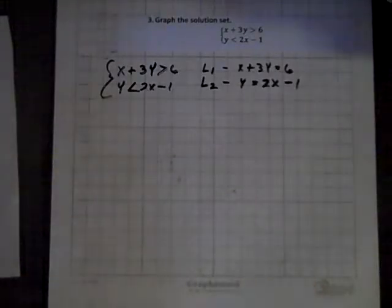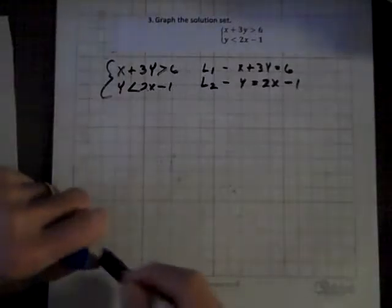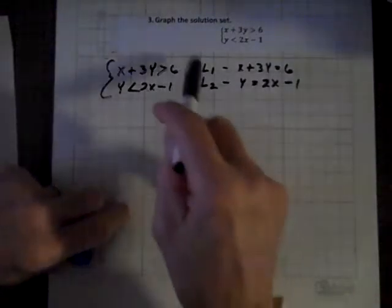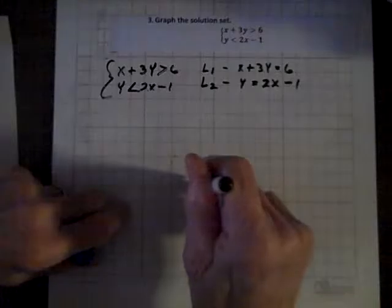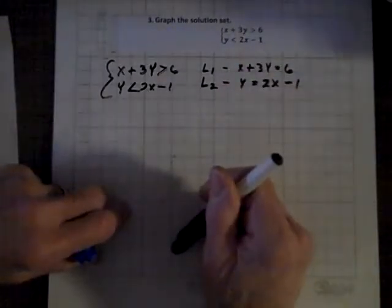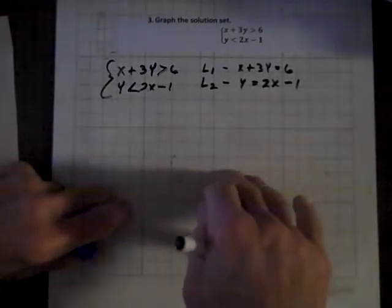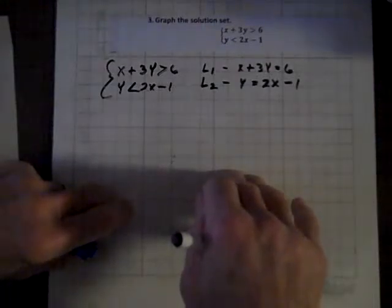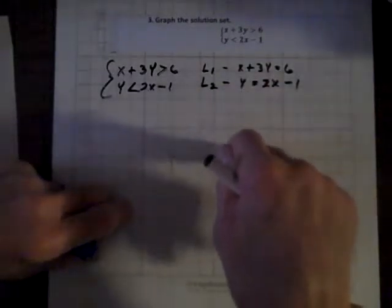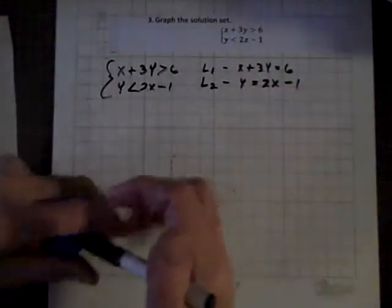Well, the final question in our trilogy charges us to graph the solution set for a system of inequalities. And when we do that, we'll shade a region containing every point that, all the points that will satisfy the system. So let's get started.